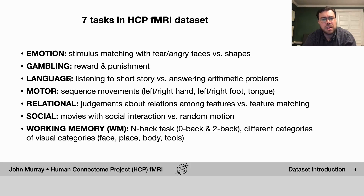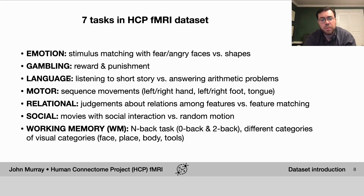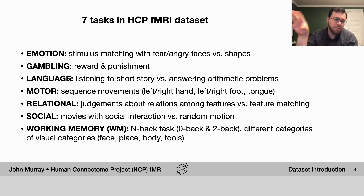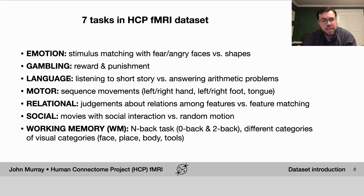The HCP dataset also includes fMRI measurements from seven different tasks. These tasks were selected to span a range of cognitive and affective processes, as well as to reliably activate a range of neural systems. When one constructs contrasts comparing different conditions or different tasks, one can observe the activation or elevated BOLD signal in different parts of the brain which are differentially engaged in these tasks. That's the brief introduction — thank you and have fun.